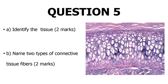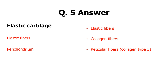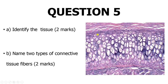You are then asked to identify this tissue, which is elastic cartilage. Connective tissue fibers include elastic fibers, collagen fibers, and reticular fibers (collagen type three). Elastic cartilage is identified by the presence of elastic fibers within the extracellular matrix and the presence of the perichondrium.